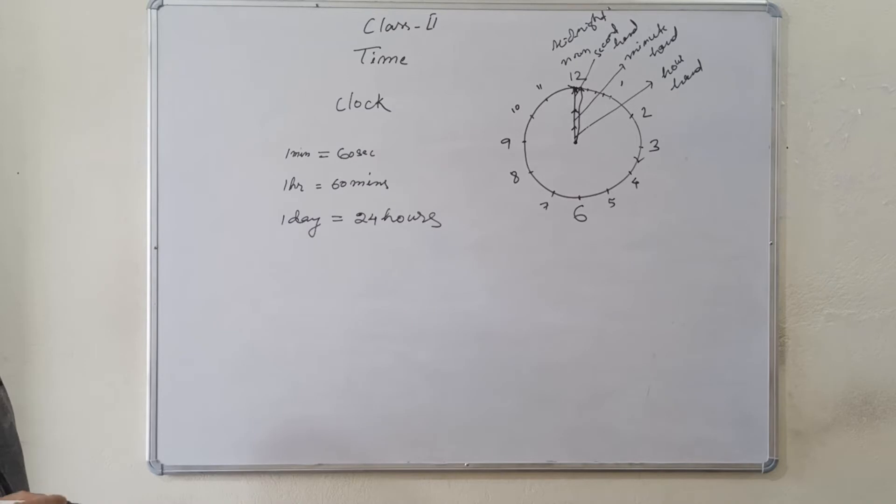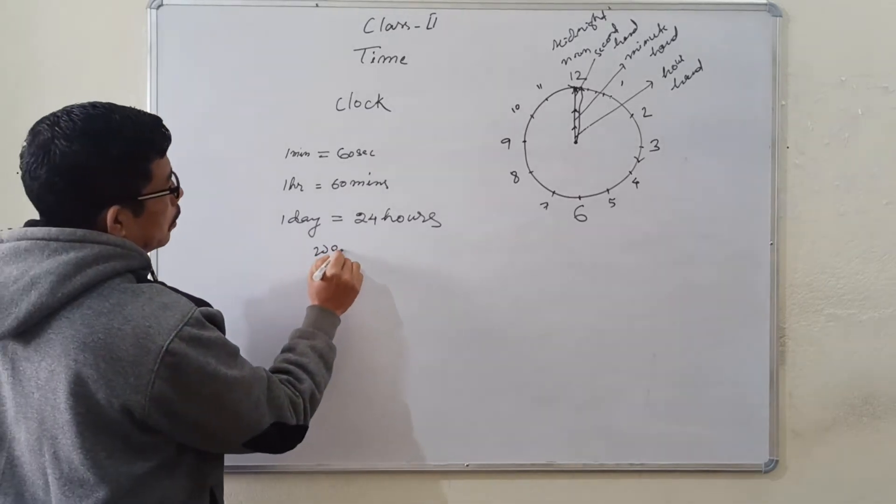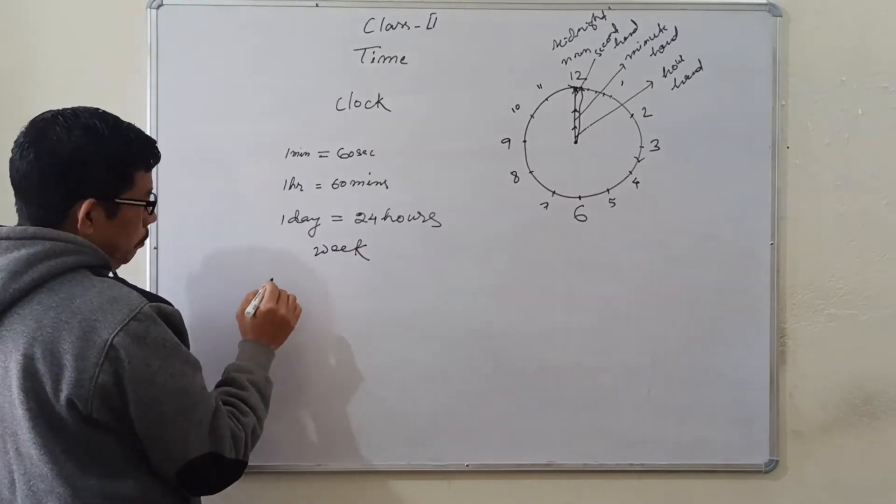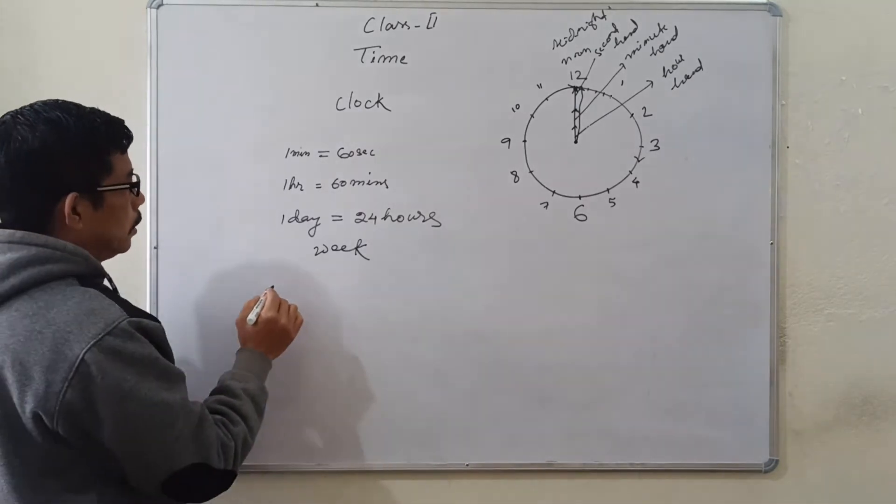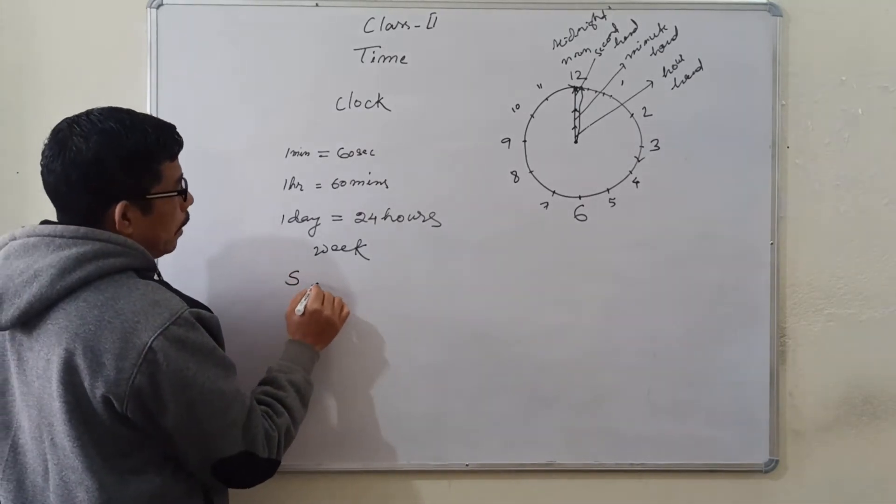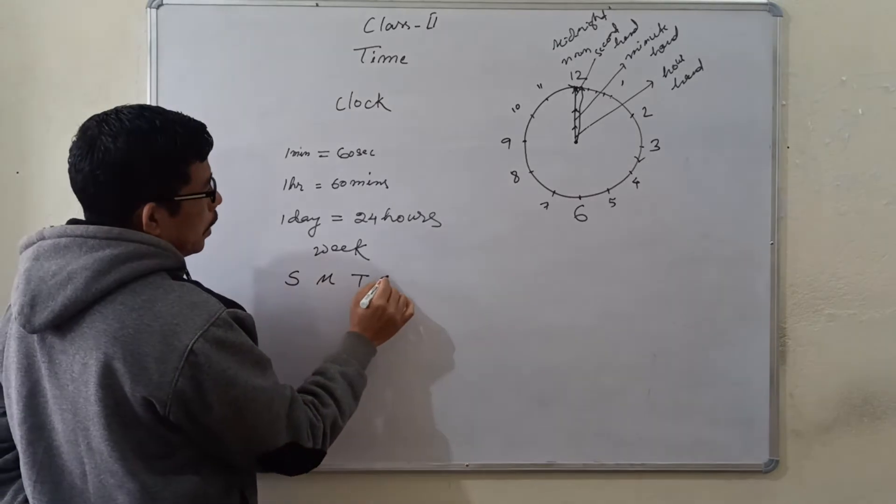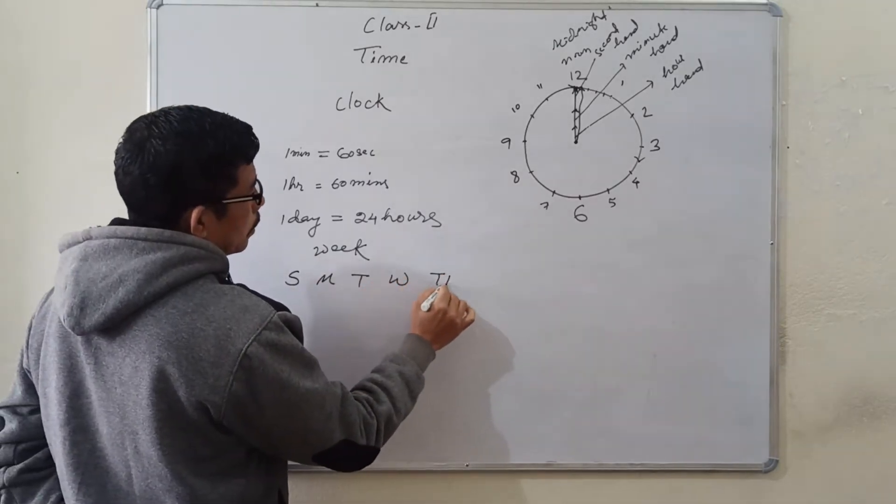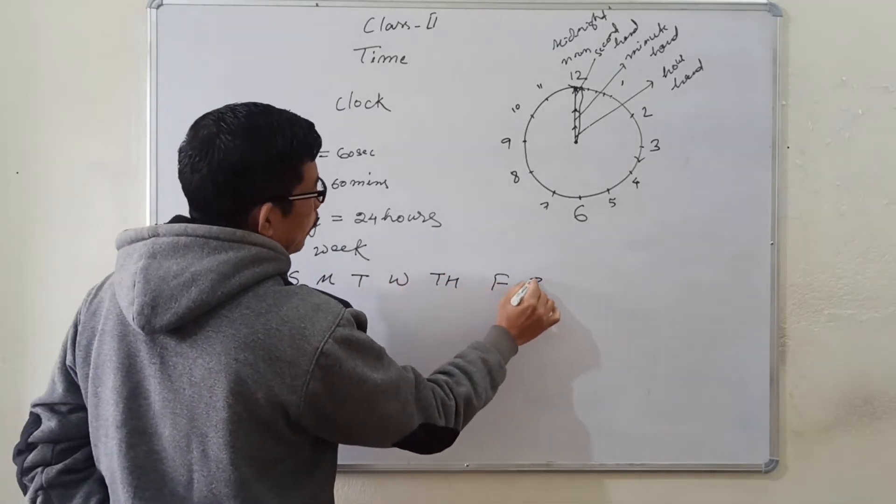Now, let's come to week. There are seven days in a week. The first, Sunday, Monday, Tuesday, Wednesday, Thursday, Friday, Saturday.